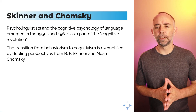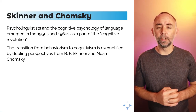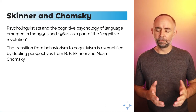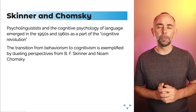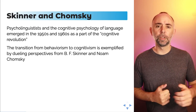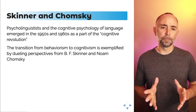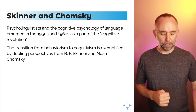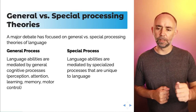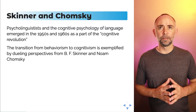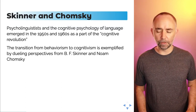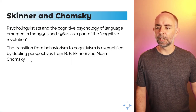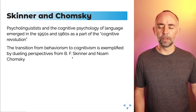I'm going to start with a historical event that occurred right around the time when cognitive psychology was becoming a discipline. This was an interaction between B.F. Skinner, who we've heard about from our lectures on behaviorism, and Noam Chomsky, a psycholinguist at the time. I think the debate between general process and special process explanations can be traced back to this interaction between these two thinkers. The transition from behaviorism to cognitivism is exemplified by dueling perspectives from Skinner and Chomsky.